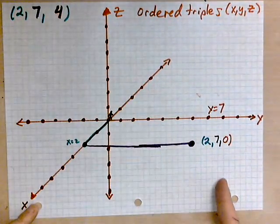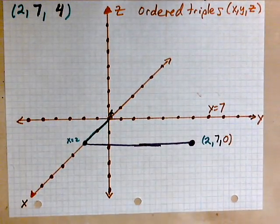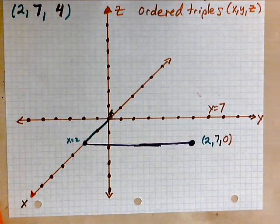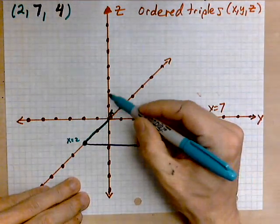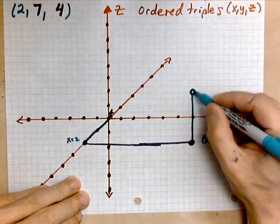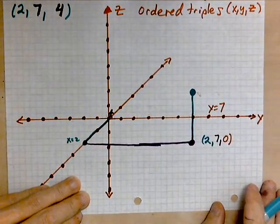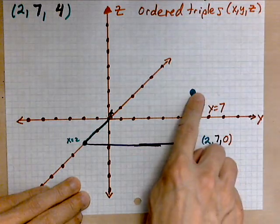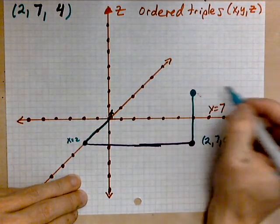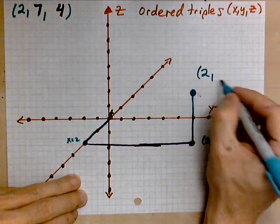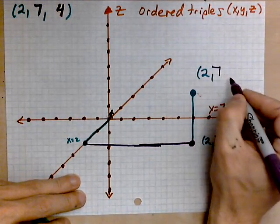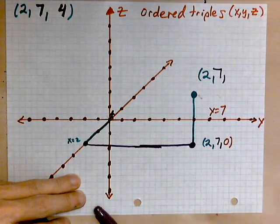Now the last move is to travel 4 straight up. So let's do that right now — I'll use the blue color here. 1, 2, 3, 4. This is a bit of an art, but roughly it's right there. Once you reach that point: x is 2, y is 7, and z is 4.